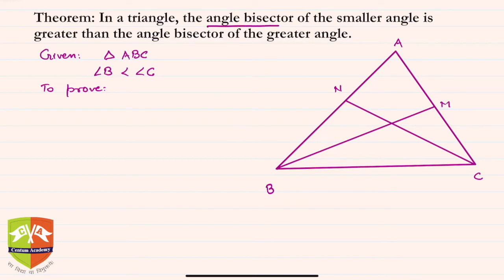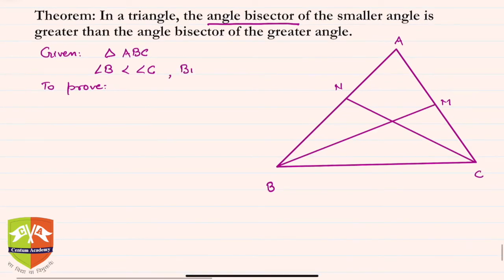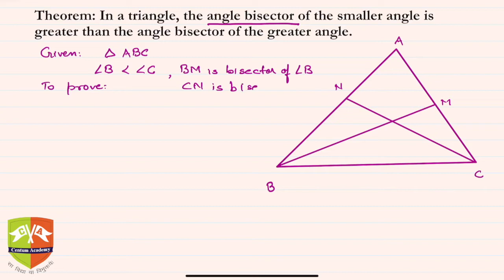BM is the bisector of angle B, and CN is the bisector of angle C. Now since angle B is less than angle C, we have to prove that BM is greater than CN — that is, the angle bisector of the smaller angle B is greater than the angle bisector of the greater angle C.